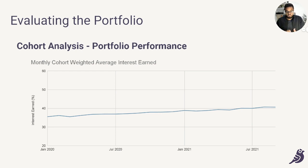We typically want to see both the interest earned and the portfolio at risk numbers improving over time, as they suggest that with each new origination, the company is both earning more money and is getting better at underwriting its customers.